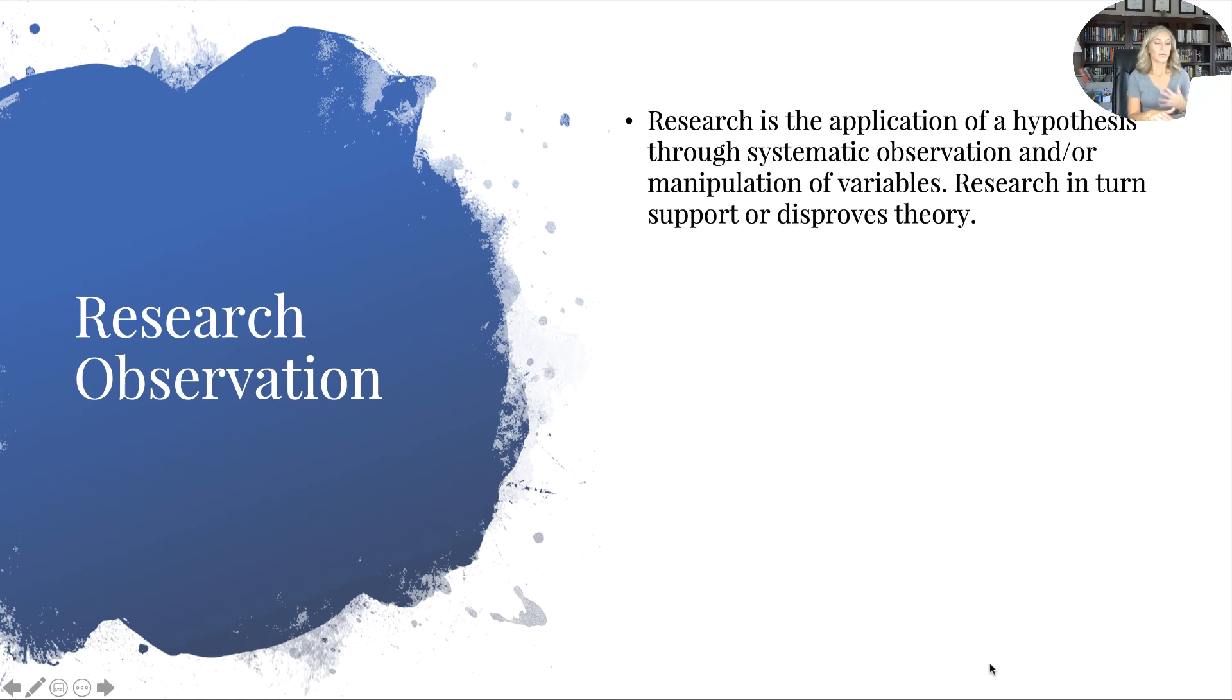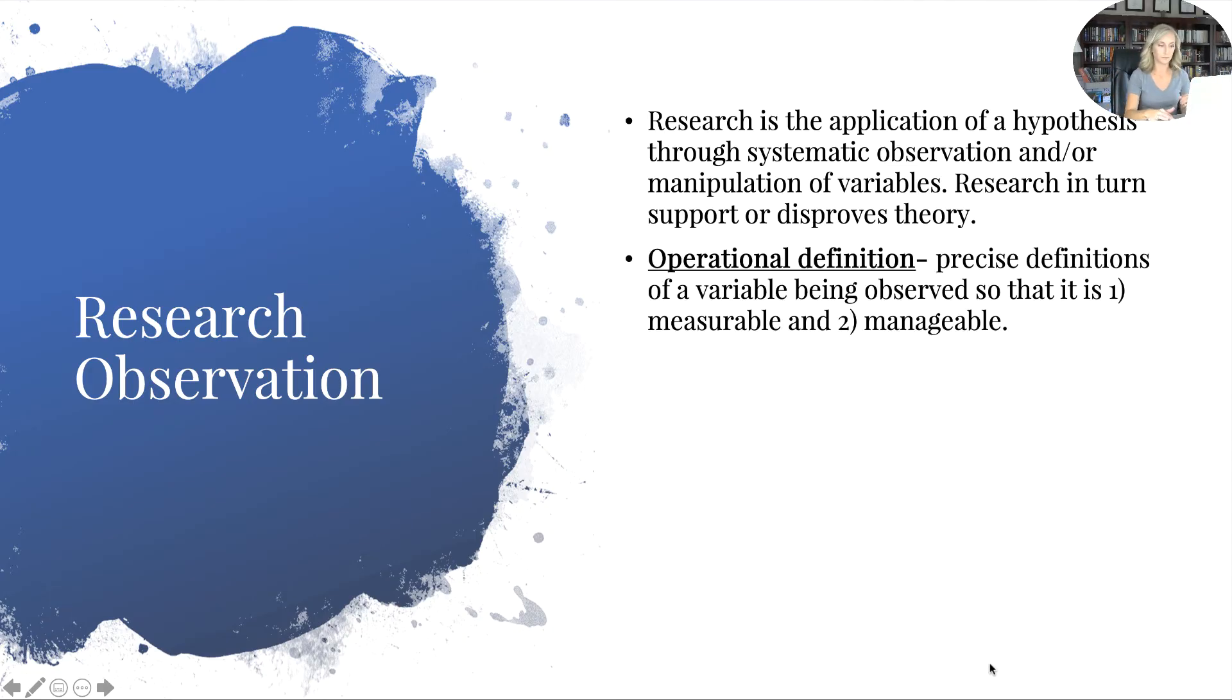So research observation is huge—simply just observing. It's the application of a hypothesis through systematic observation and/or manipulation of variables. Research in turn supports or disproves theory. And here in a few different sets of notes we're going to talk about the very specifics of that. So we have the theory—the big thought—and we have multiple pieces of research that either support or disprove that. Now, operational definition...